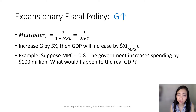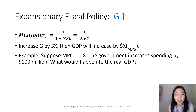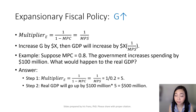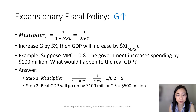Recall that our expenditure multiplier is equal to 1 over MPS. So if government spending increases by X dollars, then GDP is going to increase by X dollars times the expenditure multiplier. For example, if our MPC is equal to 0.8 and the government increases spending by 100 million dollars, we first calculate the expenditure multiplier, which is equal to 1 over MPS, and that gives you 5. Our real GDP is going to increase by 100 million dollars times 5, which gives you 500 million dollars.